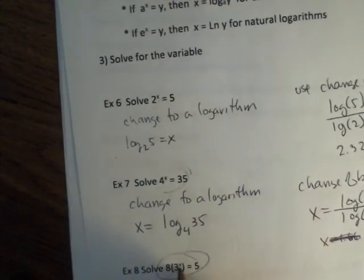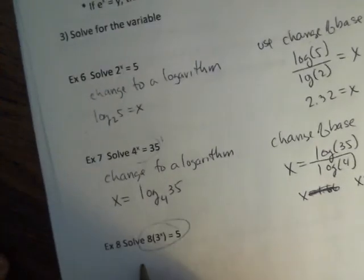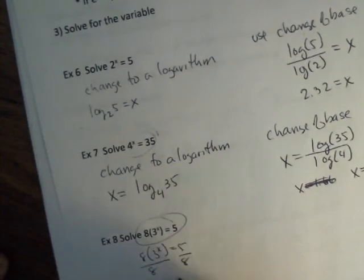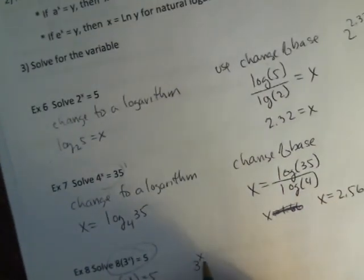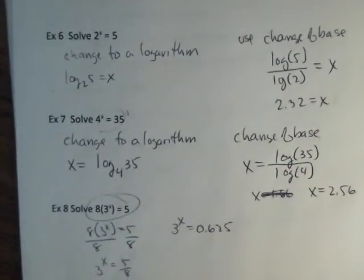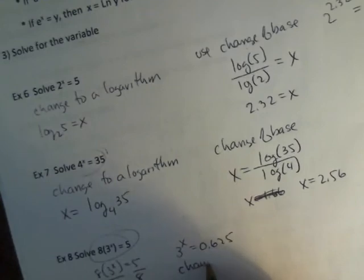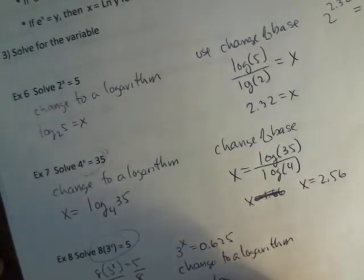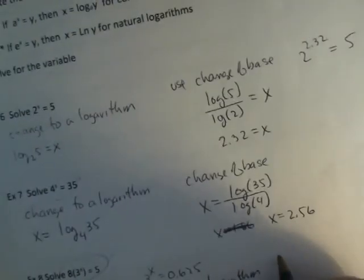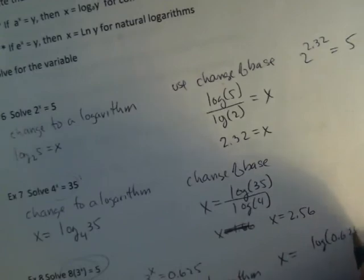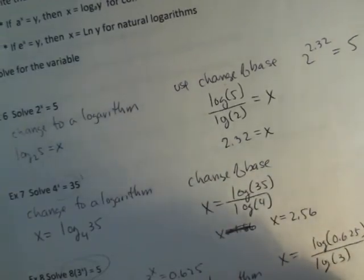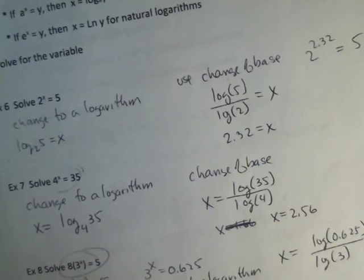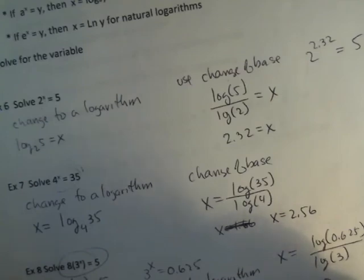Now, this one here, the base to the exponent is not isolated. See, I can divide by 8. I can't divide by 3. But I can divide by 8. So, I get 3 to the x is 5 eighths. Well, that decimal terminates. So, I'm just going to go ahead and make that 5 eighths, 0.625. Now, I change to a logarithm. So, x is log base 3 of 0.625. Use your change of base. Please make sure you can do this. I see these missed on the test so much. And I get x is negative 0.43.